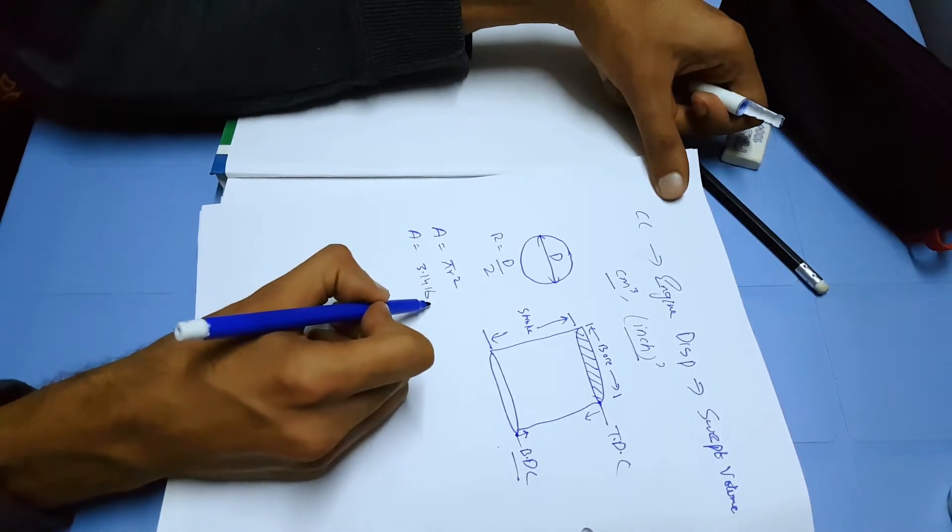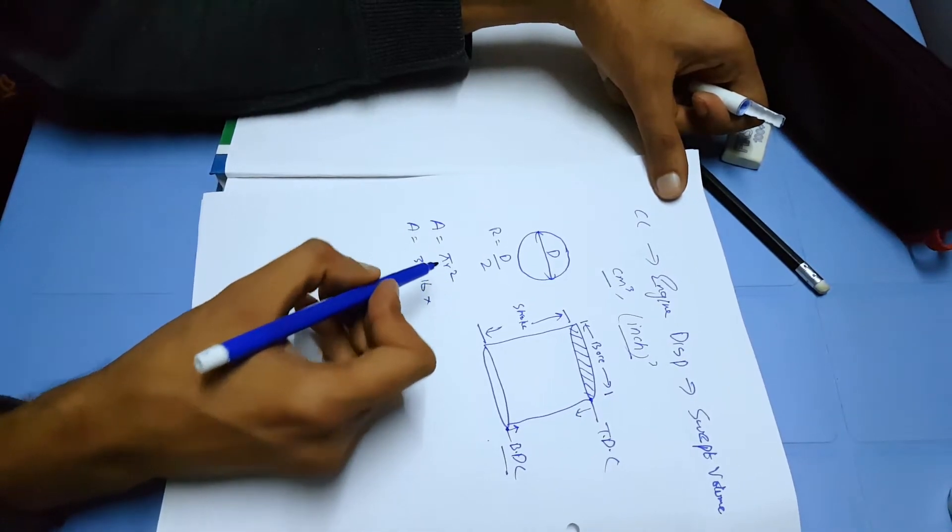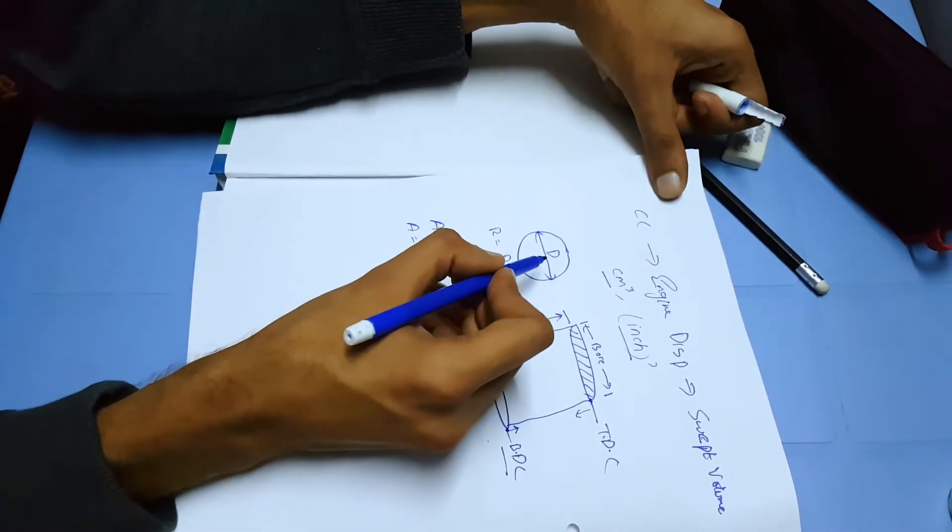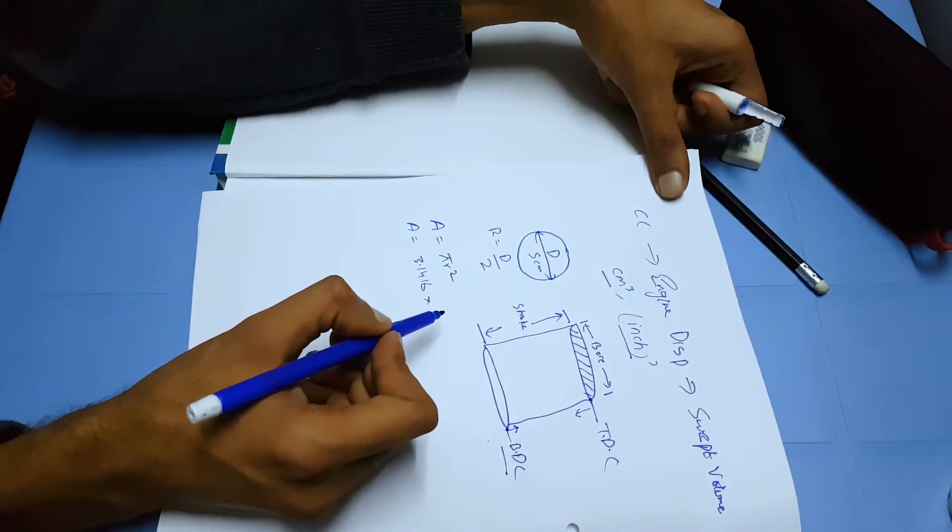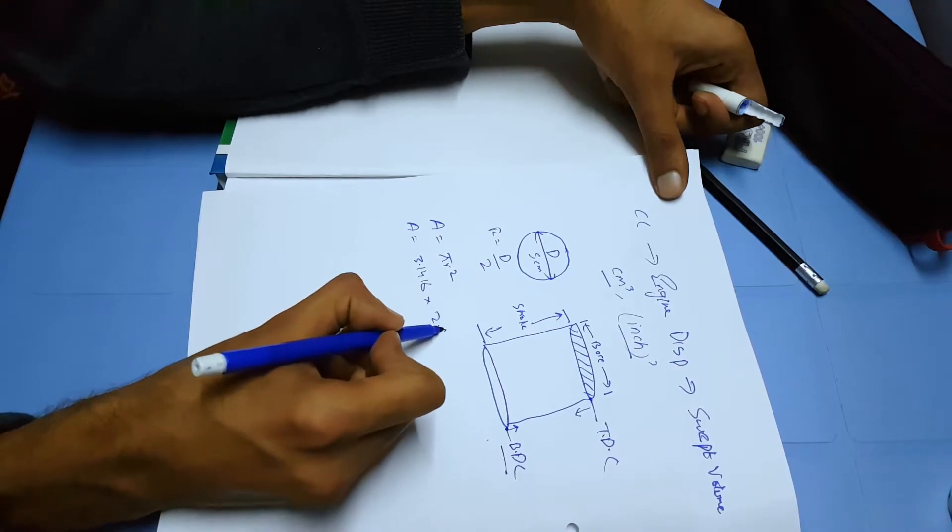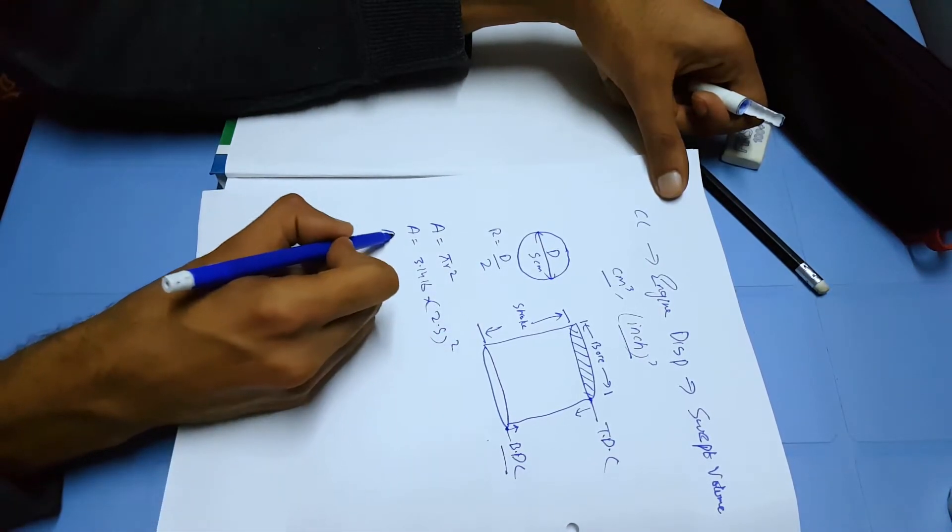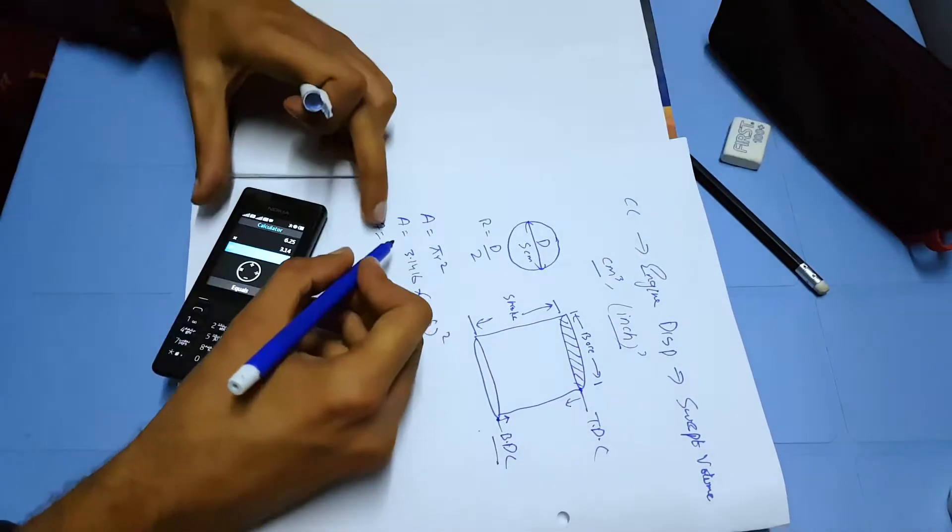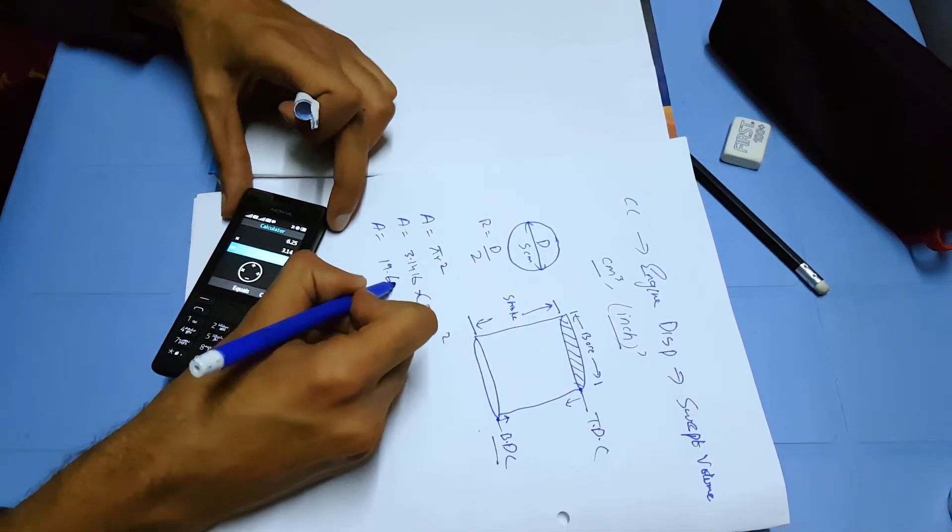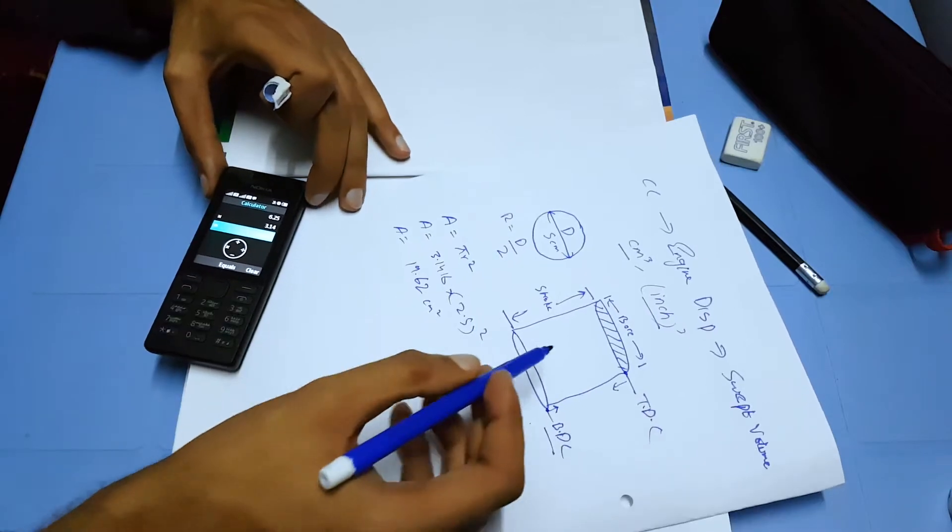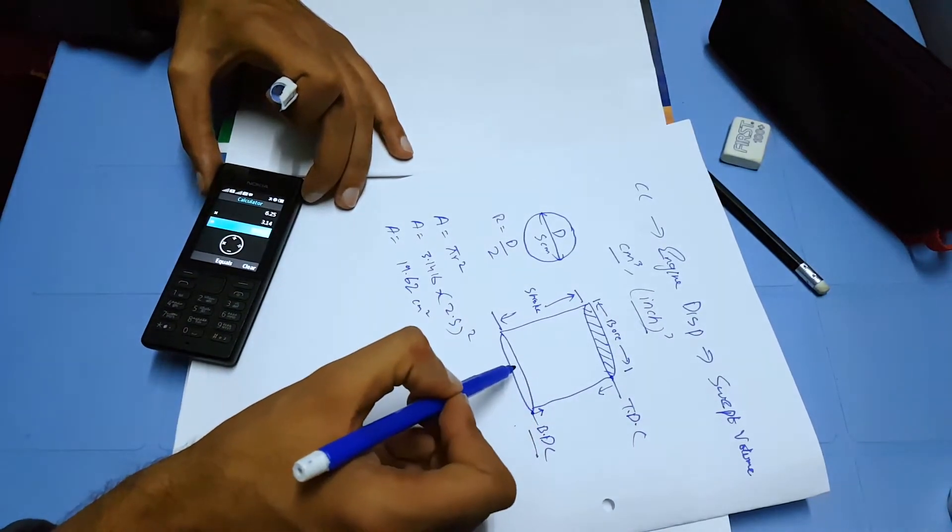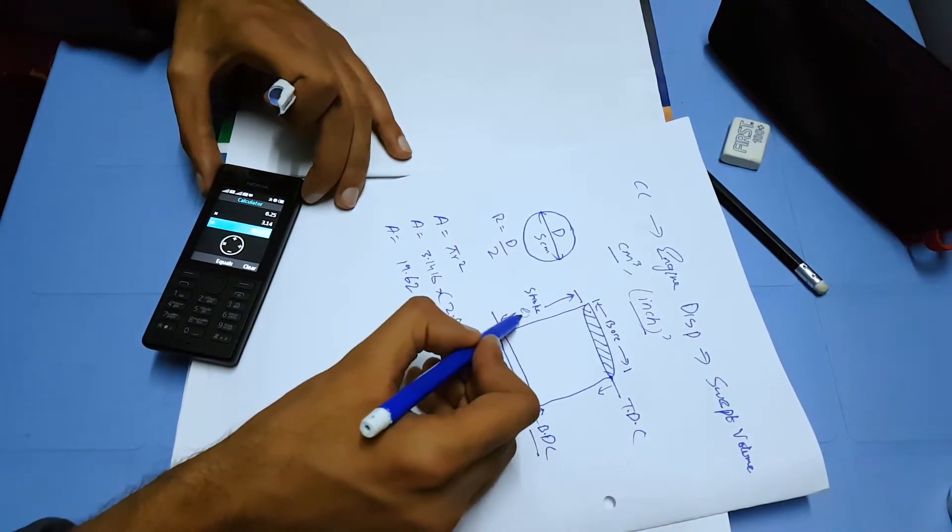For example, if the diameter was 5 centimeters, you have a radius of 2.5. Squared gives you 19.62 square centimeters. Now you have the area. To find the swept volume, all you have to do is